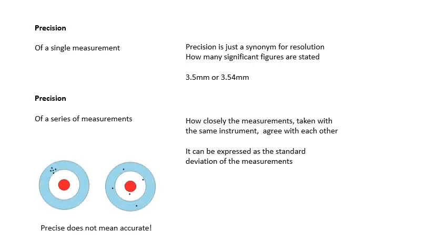Precision does not mean accuracy. If you look at this, this is the classic way of representing it. On the left, on the bullseye on the left, I've taken five measurements and they are very close together. So these measurements are very precise and they are not very accurate.